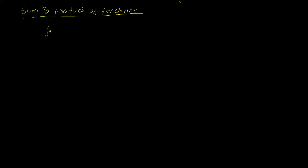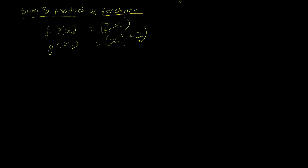Let's say I have one function f defined on the real numbers, where f(x) = 2x, so it outputs twice the value. And I have another function g(x) = x² + 1. What does it mean to take the product of these functions? In continuous math I could multiply them algebraically, but since this is discrete mathematics let's look at it in a discrete way.